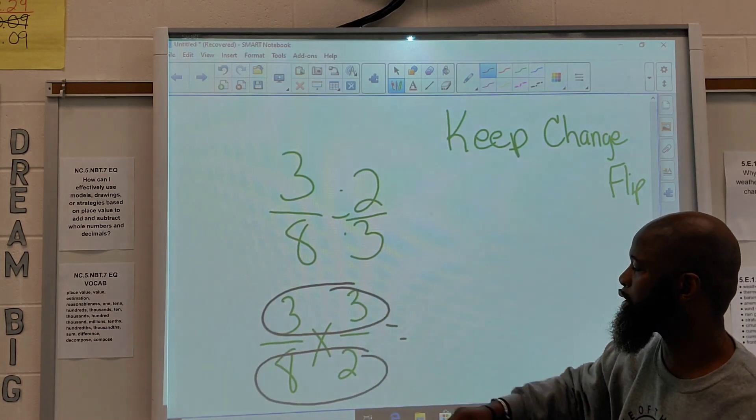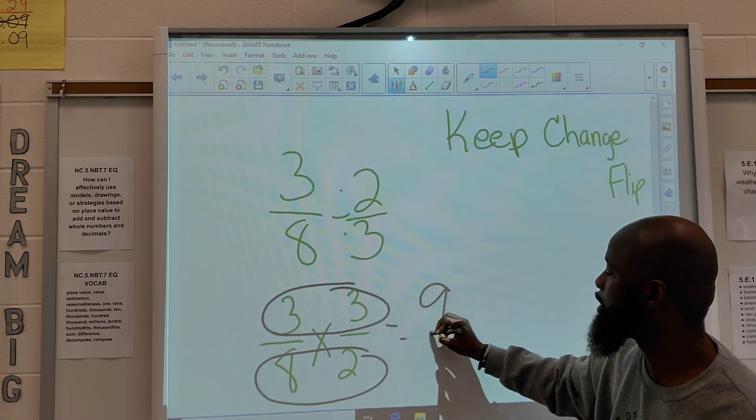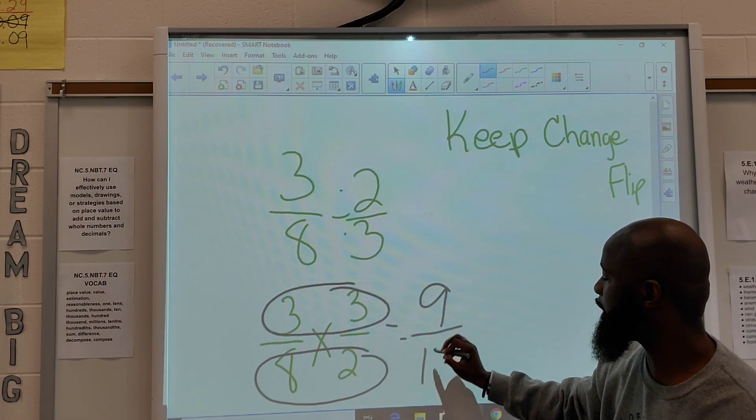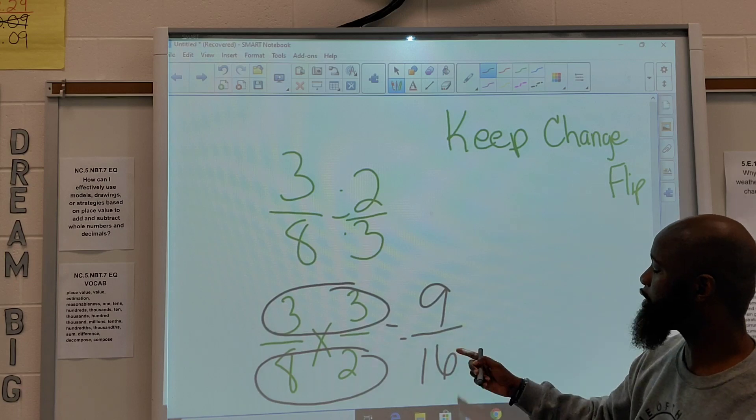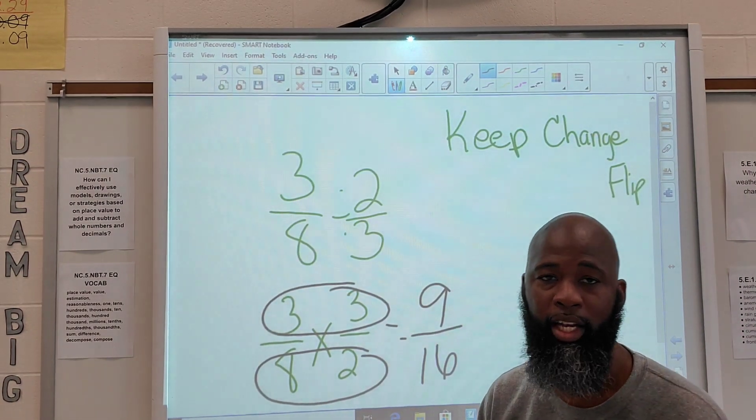Alright? In this case, 3 times 3 is 9, 8 times 2 is 16. Same answer, different strategies. And that, my friends, is how you divide fractions.